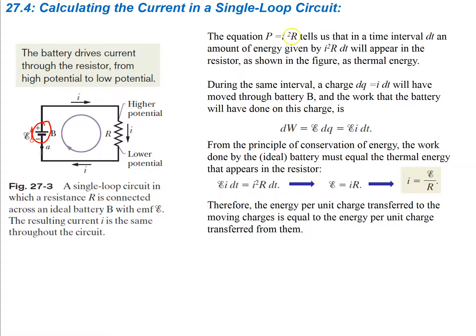The equation power equals current squared times resistance, which we've seen in the previous chapter, tells us that in a time interval dt, an amount of energy given by I²R dt will appear in the resistor as thermal energy. Power is just the little increment of work over a period of time. If that equals I²R, then a little bit of work is going to be I²R dt, which is what we have here.